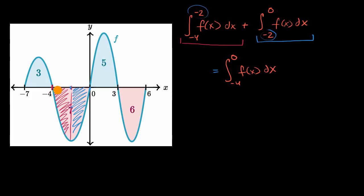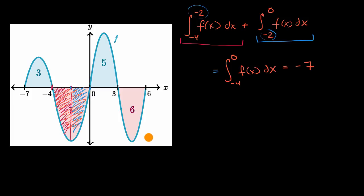This merged integral covers the entire area, but because our curve is below the x-axis here, it evaluates as the negative of that area. So this is going to be equal to negative seven.